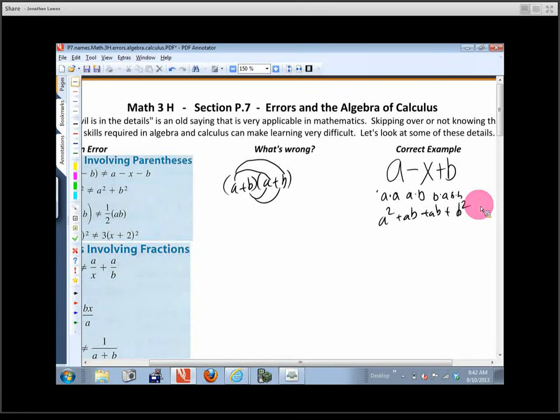And then we do a b squared. So what's the word for what we do next, or the phrase for what we do next? Combine like terms, right? So are any of those like terms? The a b's. The a b's, okay. So you've got an a squared. It's one of those. How many a b's do you have? Two. Two. So we have plus two a b. Yeah. That's good.